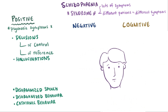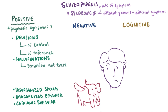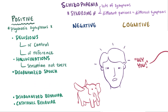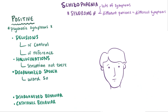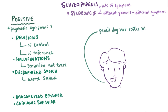Hallucinations are a second type of positive symptom and can be any kind of sensation that's not actually there, including visual but also including auditory sensations, like hearing voices or commands. A third type is disorganized speech, an example being something like a word salad, which seems like just a random jumbling of words or phrases, like: pencil, dog, hat, coffee, blue.